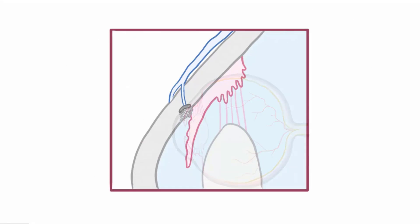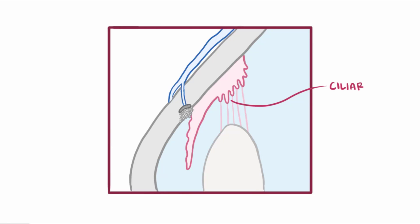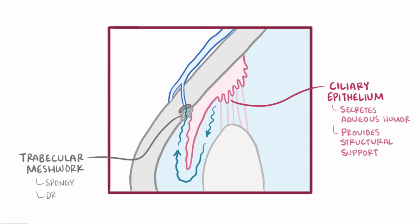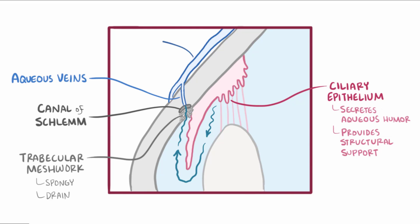Aqueous humor is a transparent watery fluid secreted by the ciliary epithelium. In addition to providing nutrients to the lens and cornea, it provides structural support and helps keep the shape of the eye. The fluid is secreted into the posterior chamber, flows through the narrow space between the front of the lens and the back of the iris, through the pupil into the anterior chamber, then out through the trabecular meshwork into the canal of Schlemm and into the aqueous veins of the episcleral venous system.